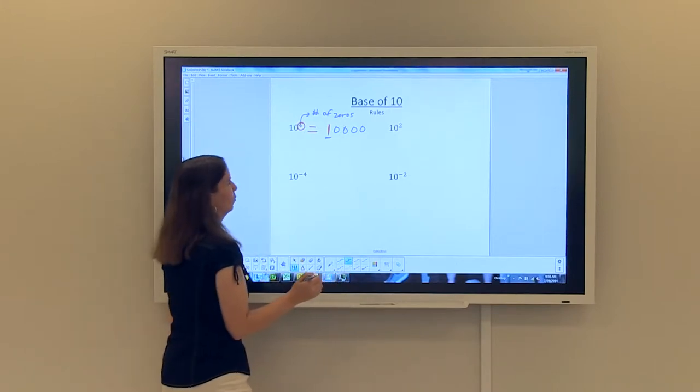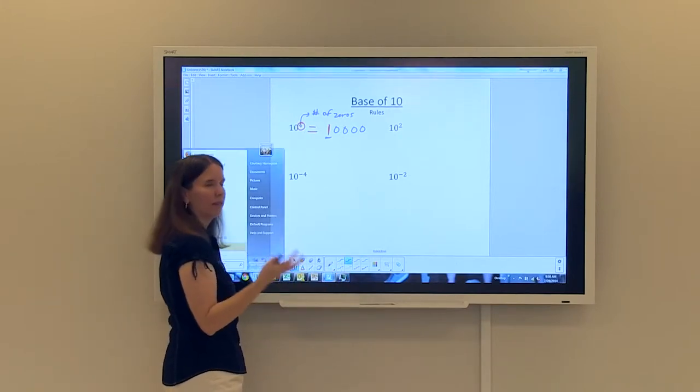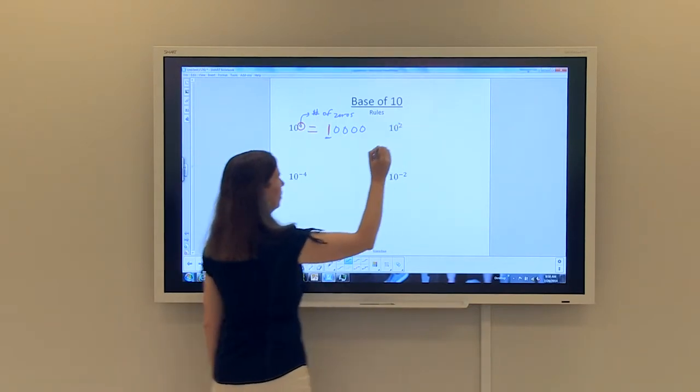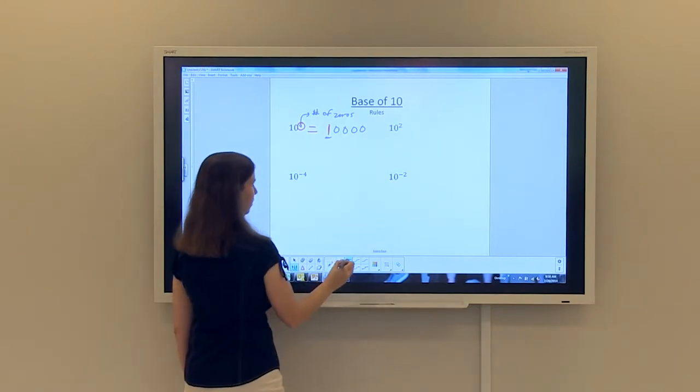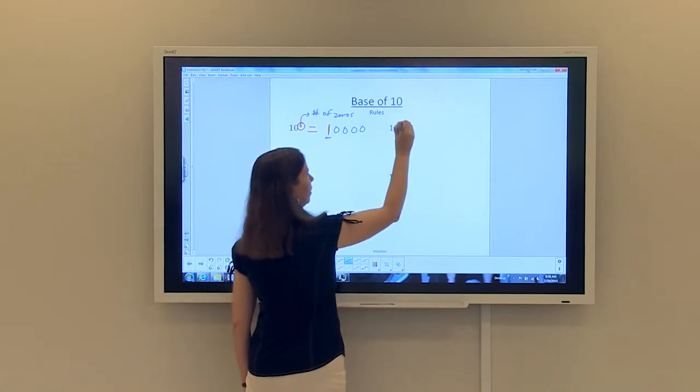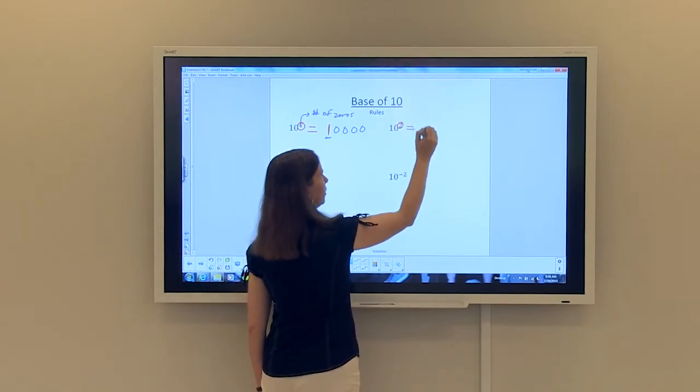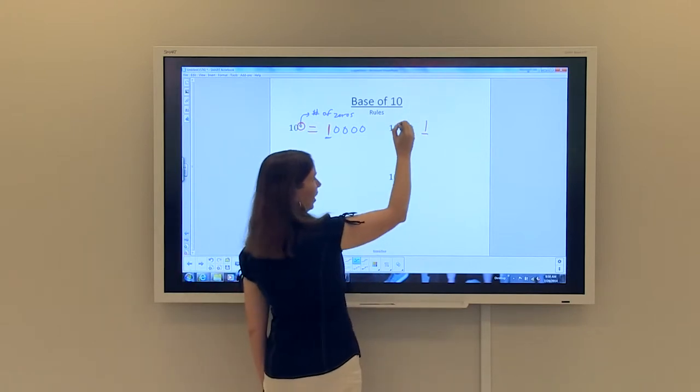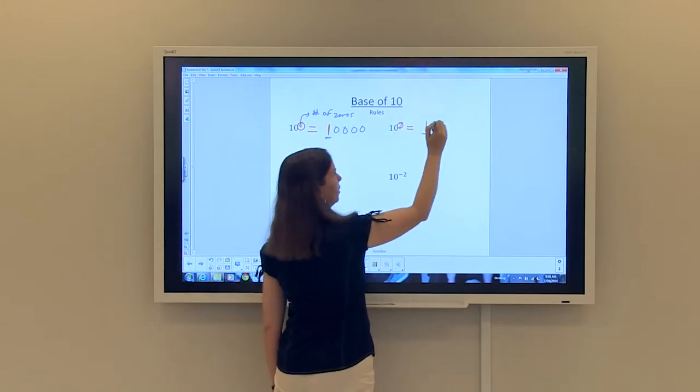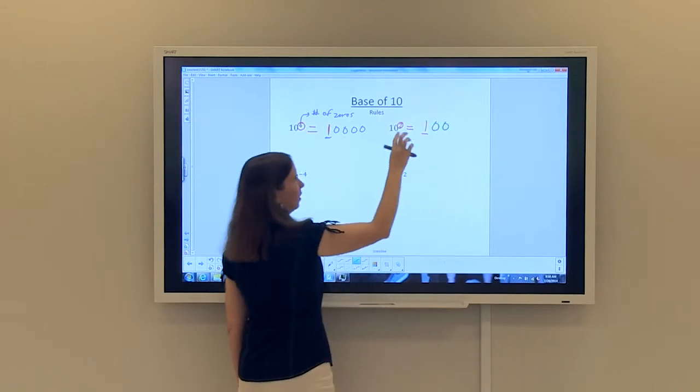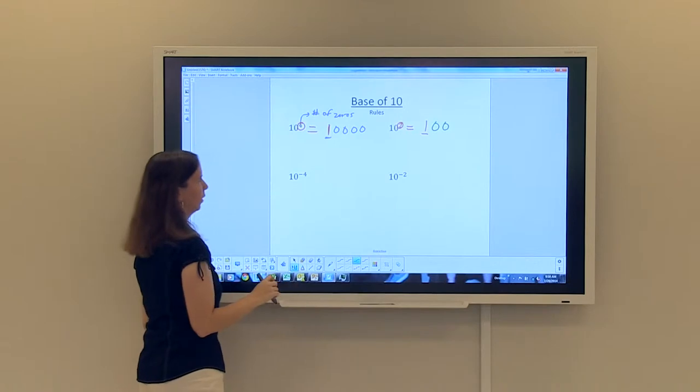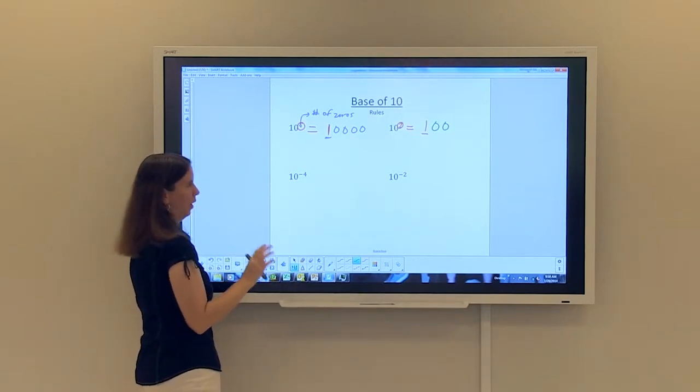Let's try it with the second example. So 10 to the second. Again, I have a base of 10. I know that because the power is positive, the one is going to come first. So there's our one. And then we know that since the power is two, I'm going to have two zeros that follow. And we all know that 10 to the second power is 100. So a really easy way to do that as well. So that's with positive powers.